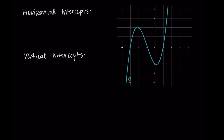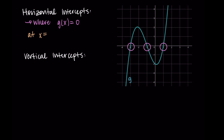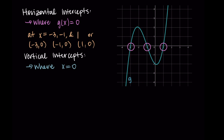Let's try this again on our other graph. The horizontal intercepts are where g(x) = 0. In this case, we have multiple horizontal intercepts. I'm seeing that at x = -3, x = -1, and x = 1, the graph intersects the x-axis. So we could write those x values, or label the points individually: (-3, 0), (-1, 0), and (1, 0). The output is zero in each case, with different x values providing each intercept. For the vertical intercept, where x = 0, I can see that this happens at y = -2, which corresponds to the point (0, -2).